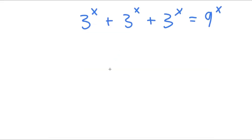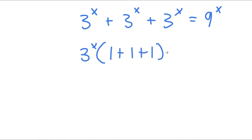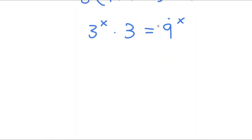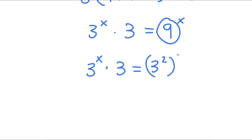In this problem, I have 3 to the power of x plus 3 to the power of x plus 3 to the power of x is equal to 9 to the power of x. I'm going to factor out 3 to the power of x. So I have 3^x times (1 plus 1 plus 1) equals 9^x. Simplifying the parentheses, I get 3^x times 3 equals 9^x. Now 9 is the same as 3 squared, so I have 3^x times 3 equals 3 squared to the power of x.